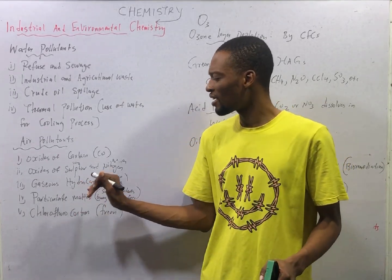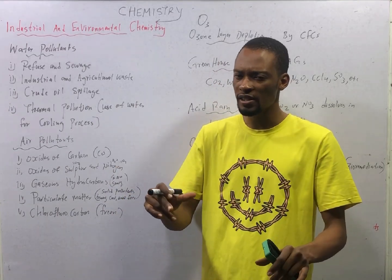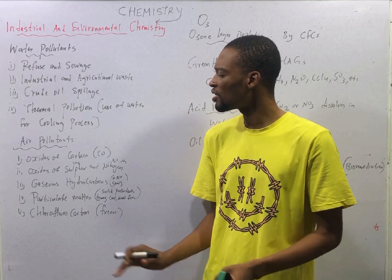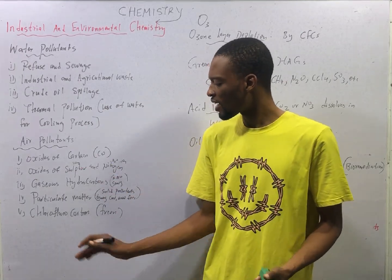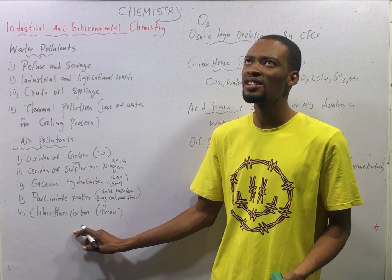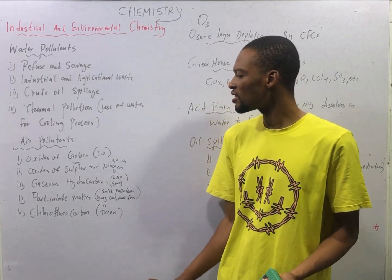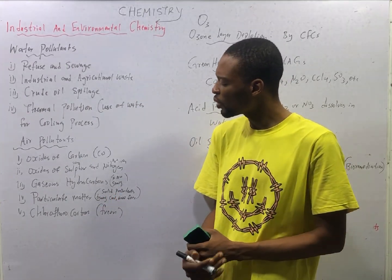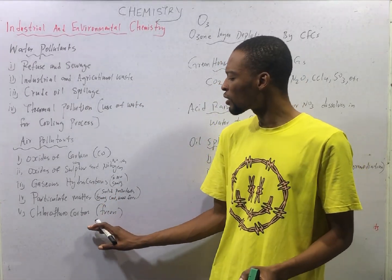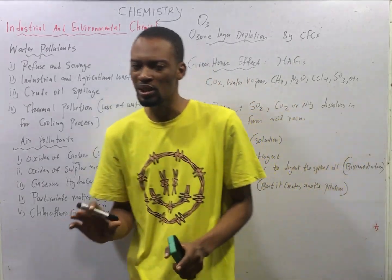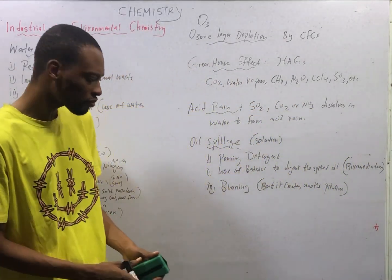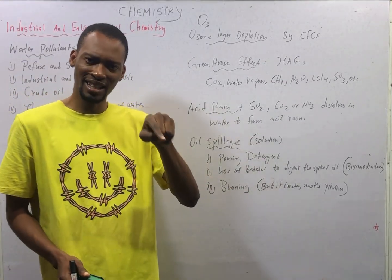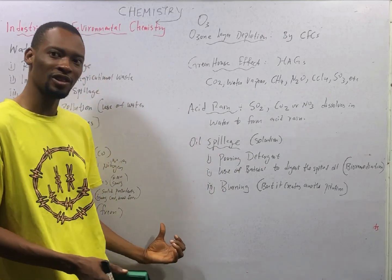Particulate matter are also air pollutants — these are solid pollutants. Burning of coal and wood fire creates air pollution. Chlorofluorocarbons (CFCs) are air pollutants. An example of a chlorofluorocarbon is Freon. Chlorofluorocarbons are man-made pollutants — chemicals made by man that cause pollution. In your air conditioner and in your fridge, the refrigerant gas they work on is Freon.